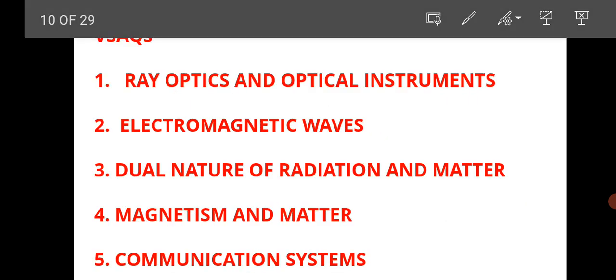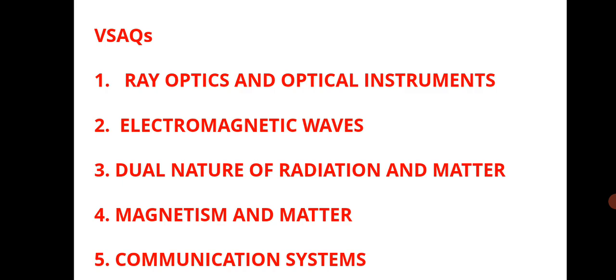Let us see the strategy for VSAQ questions. Just read ray optics, electromagnetic waves, dual nature, magnetism and matter, and communication systems VSAQs. The important question list is given in the description as well as the blueprint. You can check in the description all important questions. These are very important chapters. If you prepare, definitely you will get 10 marks.